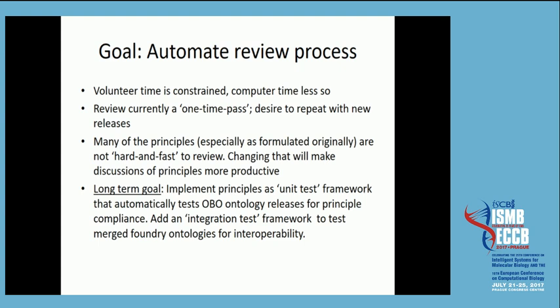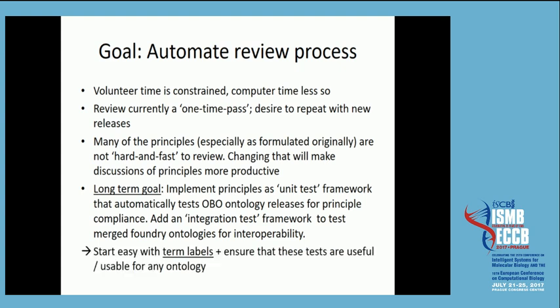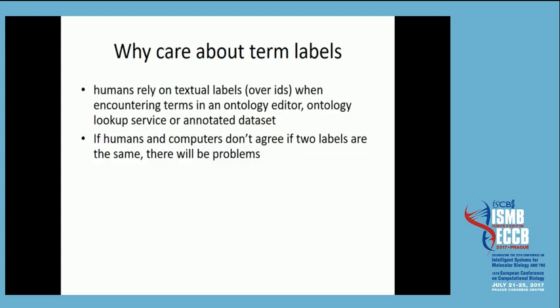Our long-term goal is to have essentially two sets of testing frameworks. One is a unit test framework where you ask, for a given ontology by itself — without any OBO Foundry interoperability with others — does it comply with what we consider principles? And then an integration test framework that says, for ontologies that really want to be in the Foundry and interoperate, you put them all together and see if the merged ontology breaks. We've gotten funding for this, and we want to start with something simple: term labels.